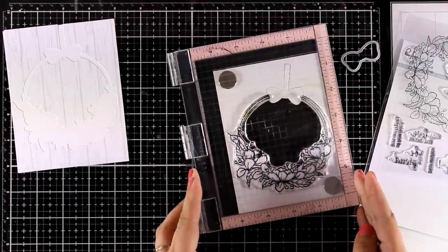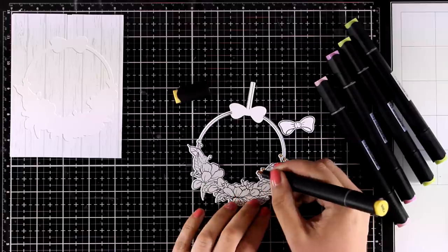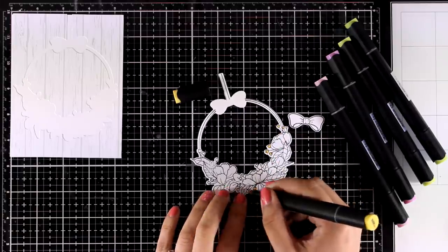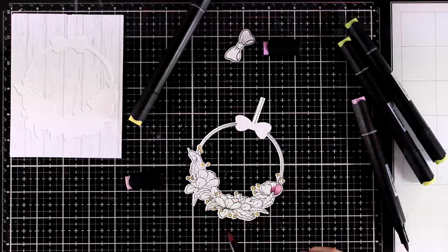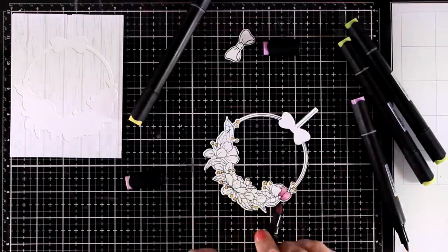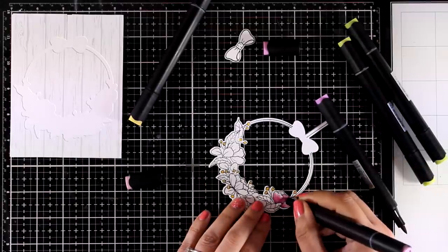I am going to do the stamping a couple of times just to get a good impression. And then I will go ahead and start coloring. Now the flowers and the leaves are quite small so I am only using two shades of purple here to color the flowers. And I will use only two shades of green for the leaves.